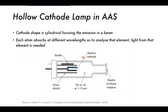The cathode shape is cylindrical so it can focus the emission into a beam. It looks like a U-shape or tuning fork in cross-section, but it is actually a cylinder. This cylinder causes the light to be focused out through a quartz or pyrex window, and that beam is directed towards the flame so that analyte atoms matching the cathode element can absorb it.